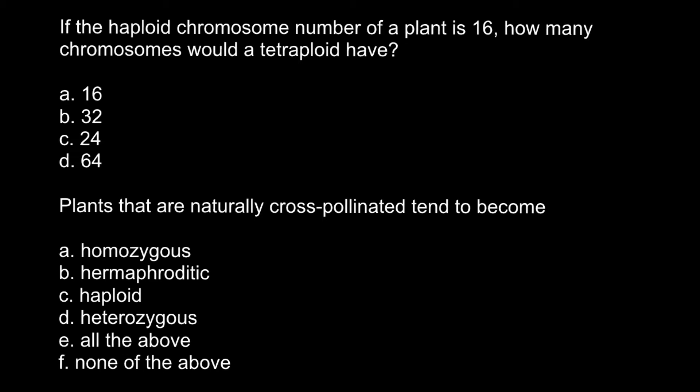Here is the first question: if the haploid chromosome number of a plant is 16, how many chromosomes would a tetraploid have? There are four answers to choose from. If you are confused about which answer to choose, here is my explanation.